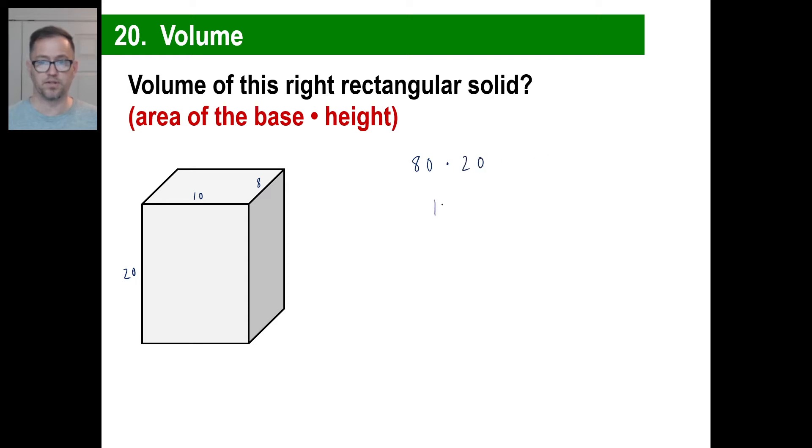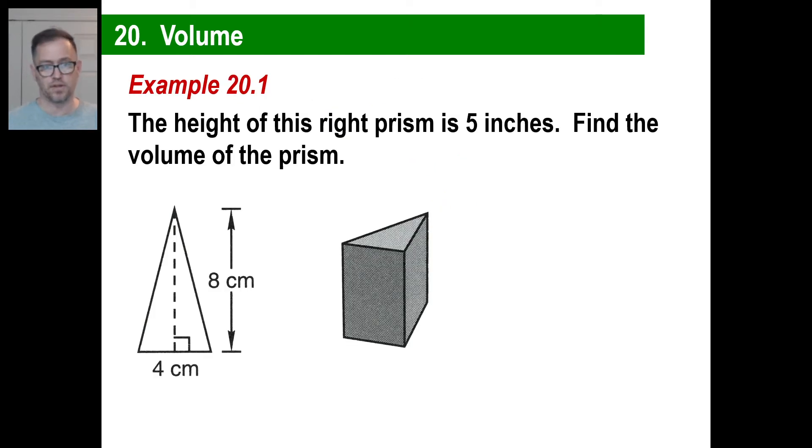8 times 2 is 16. That'll be 1,600 cubic inches. Each one of these layers will have 80 cubes that fit on it. That means we have 20 layers of 80 cubes gives us 1,600 cubes. That's the volume of that, right?